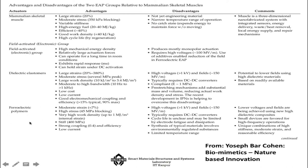Ferroelectric polymers have a strain level of only about 7 percent, but stress is high at 45 MPa blocking stress — much higher than the kilopascal range of mammalian muscles. They have very high work density, stiff and strong coupling, but also require high voltage. Cycle life is a problem due to fatigue, and there is a limited temperature range. People are now trying to achieve lower voltage and fields in ferroelectric polymers, with high energy density and small devices at high frequency under focus.